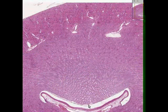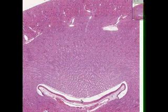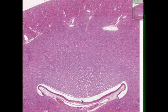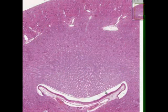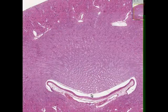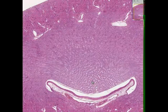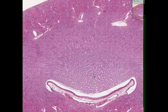The renal papilla dips into a urinary space lined with transitional epithelium called a minor calyx. One or more minor calyxes fuse to form a major calyx, which we don't see here. Three or four major calyxes then fuse to form the renal pelvis, and the renal pelvis rapidly tapers off into the ureter.